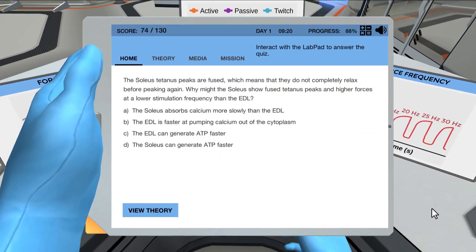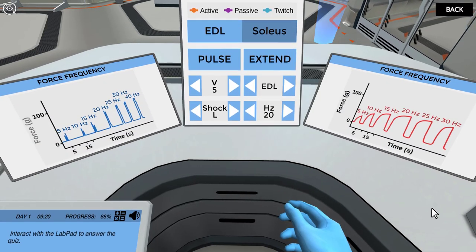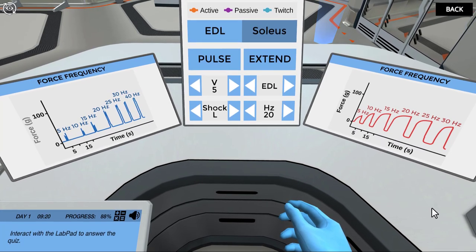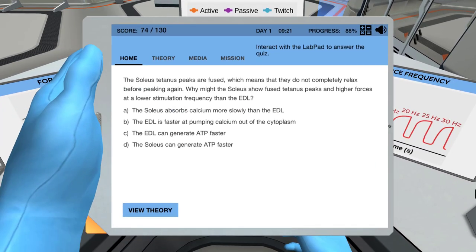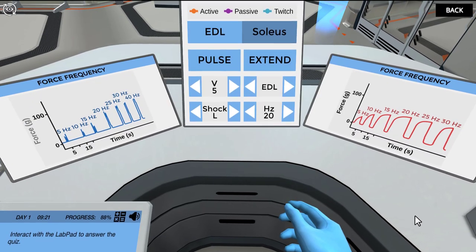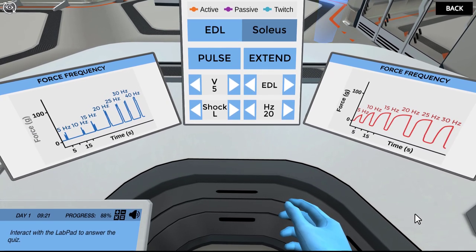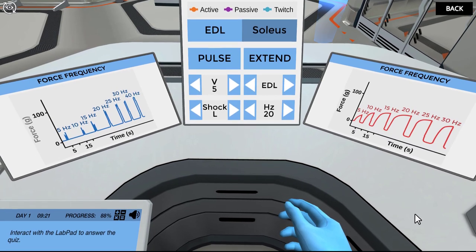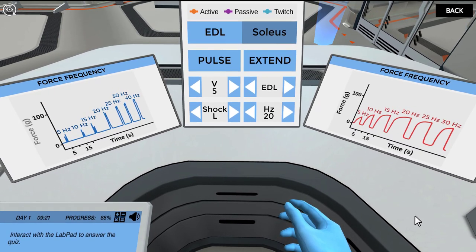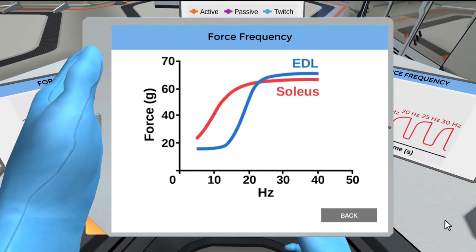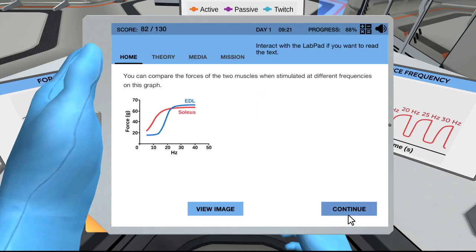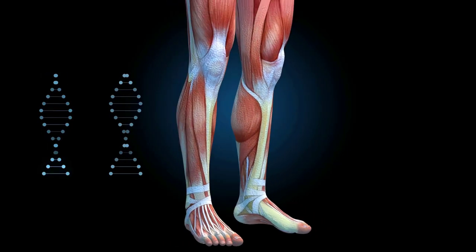The soleus tetanus peaks are fused, which means that they do not completely relax before peaking again. Why might the soleus show fused tetanus peaks and higher forces at a lower stimulation frequency than the EDL? Great work. Yes, the fused tetanus peaks are caused by calcium ions remaining inside the fibers of the soleus. The EDL is faster at getting rid of the calcium ions which then prevents tetanus at the same low stimulation frequencies. You can compare the forces of the two muscles when stimulated at different frequencies on this graph. Awesome job! That was a lot to learn about muscle stimulation.